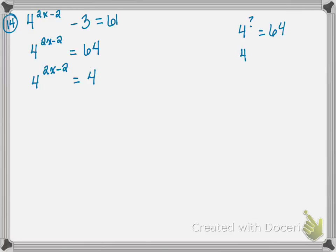Let me think about powers of 4. 4 to the first power is 4, 4 to the second power is 16, and 4 to the third power is 64. So 4 to the third power is the same as 64, which means I can rewrite 64 as 4 to the third power.